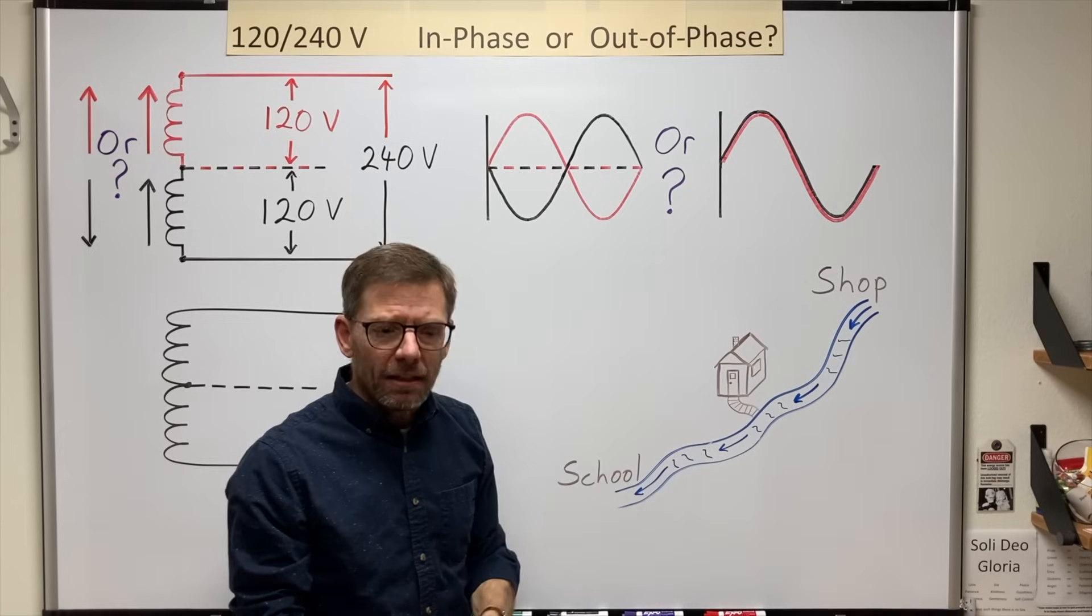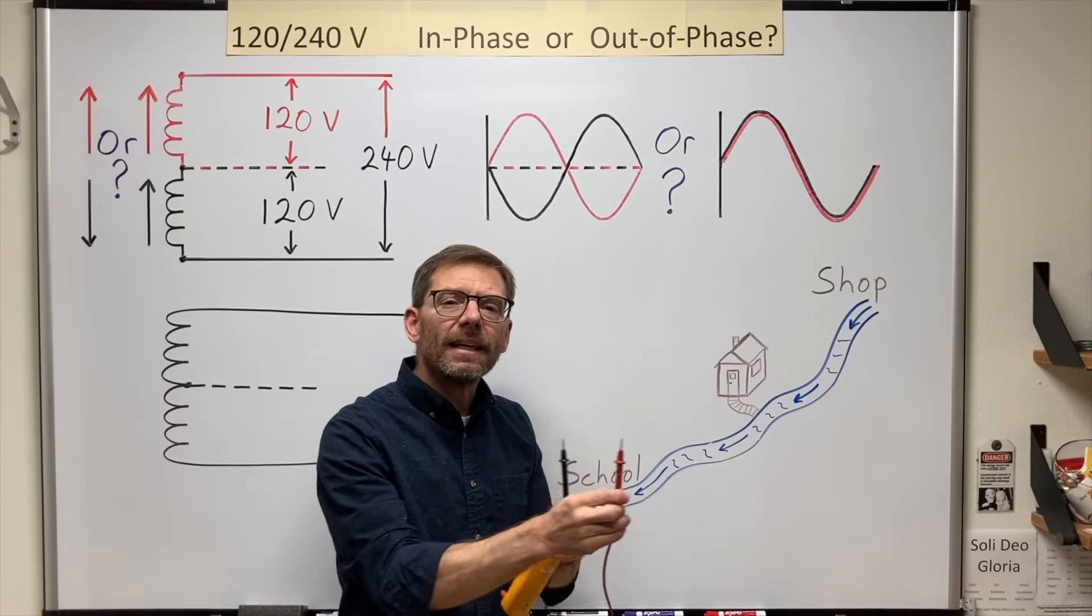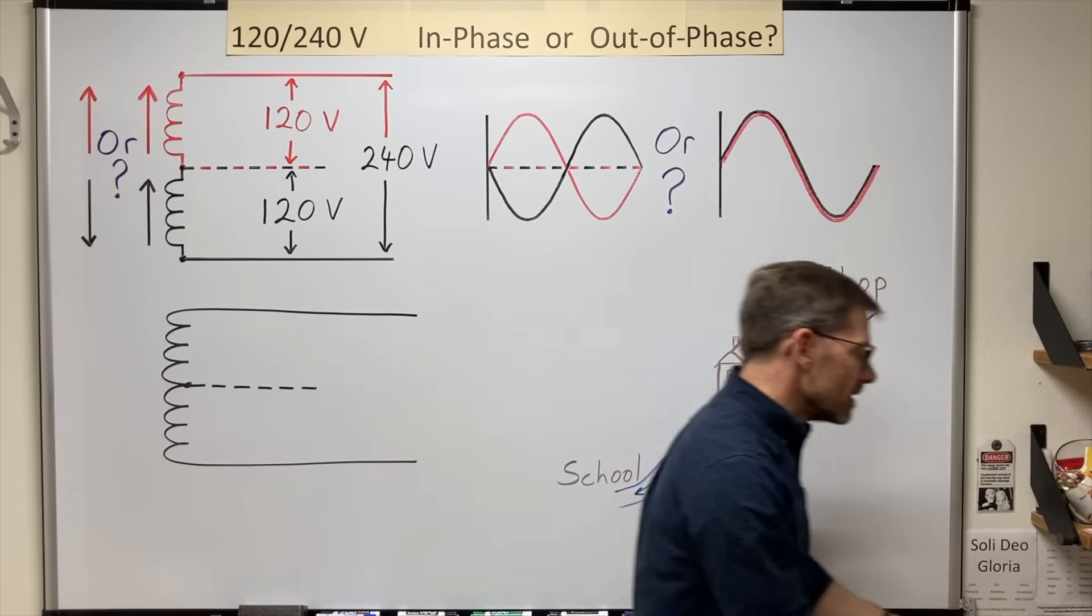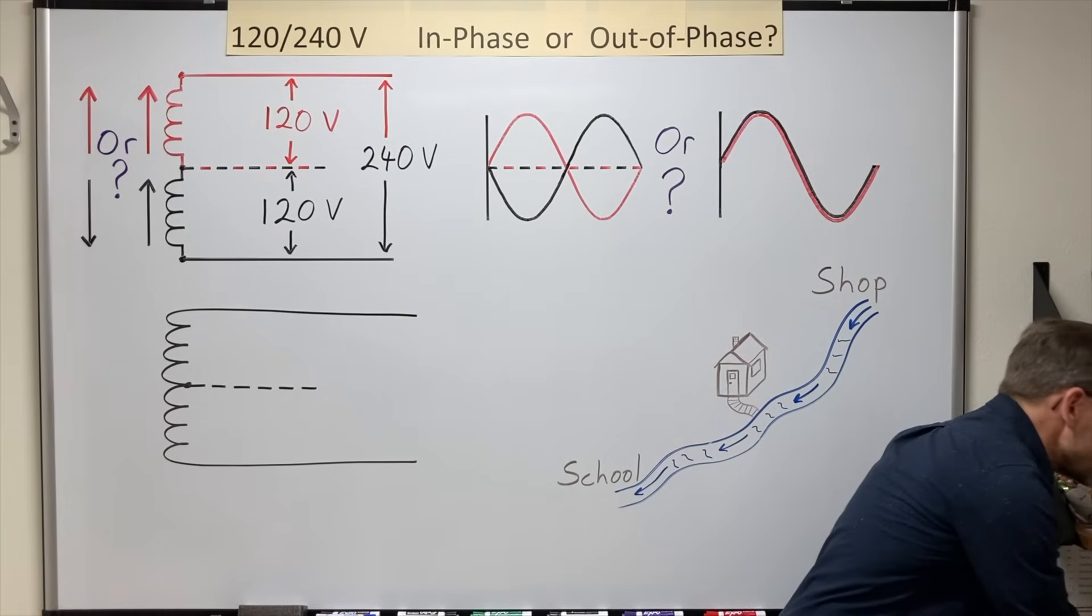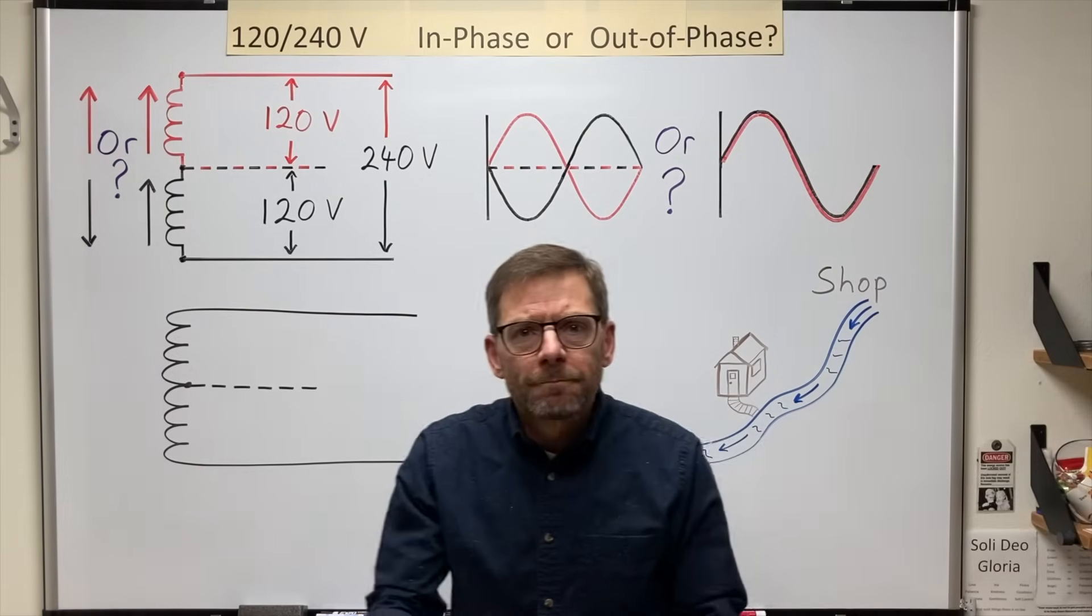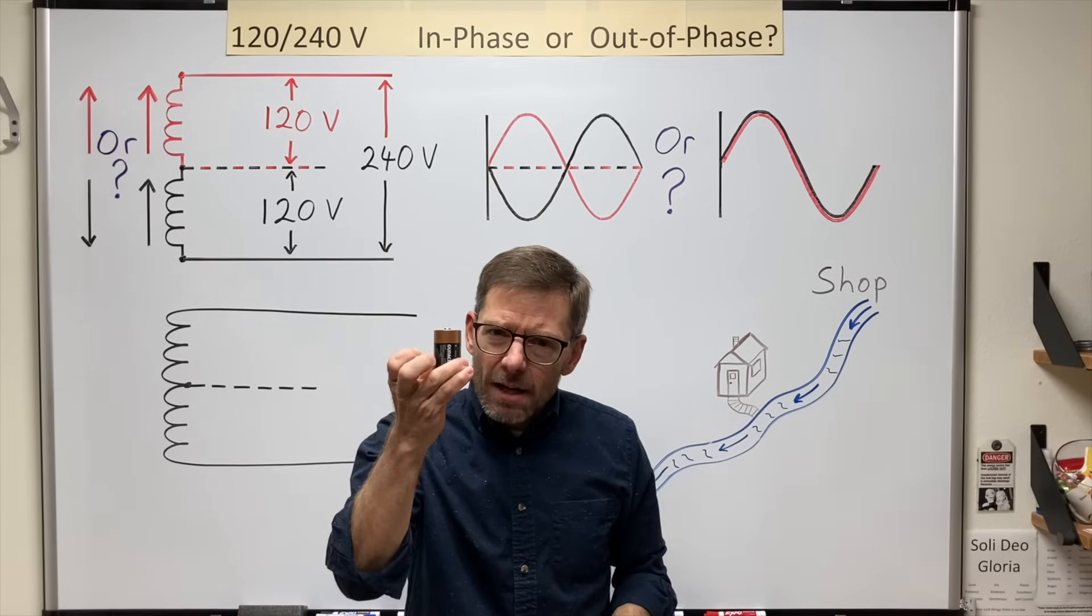So which of these is a better representation of what we might see on a scope? Or could they both be depending on how the leads are oriented?